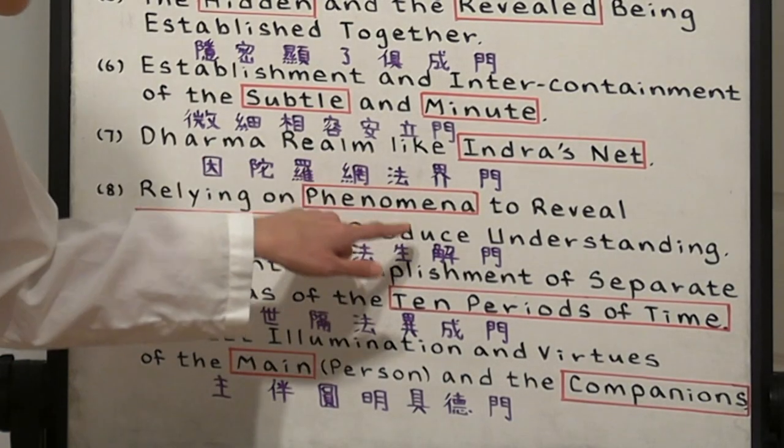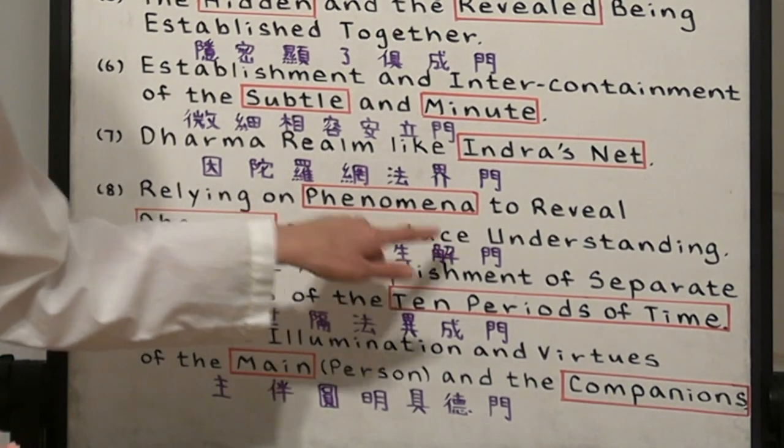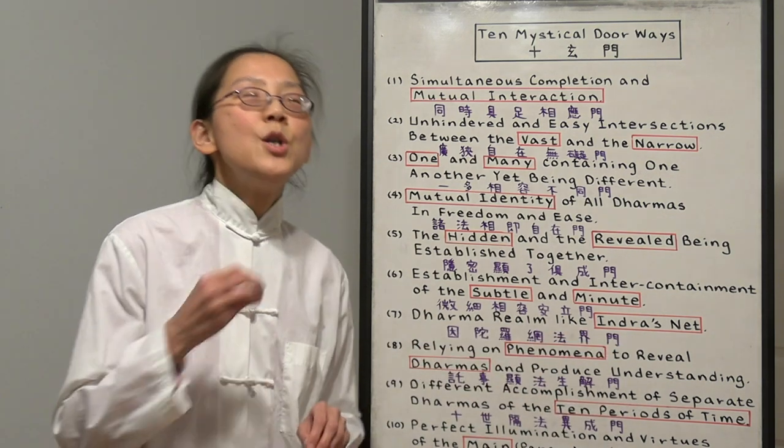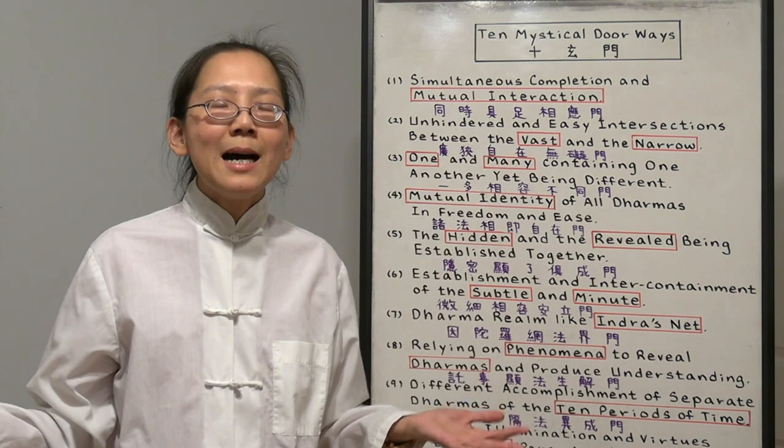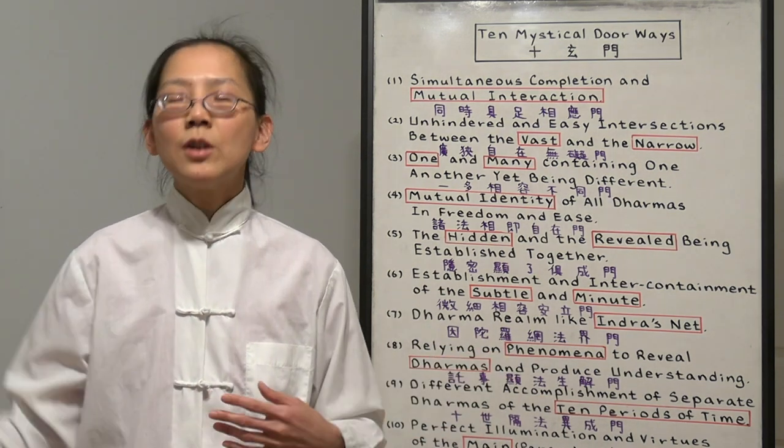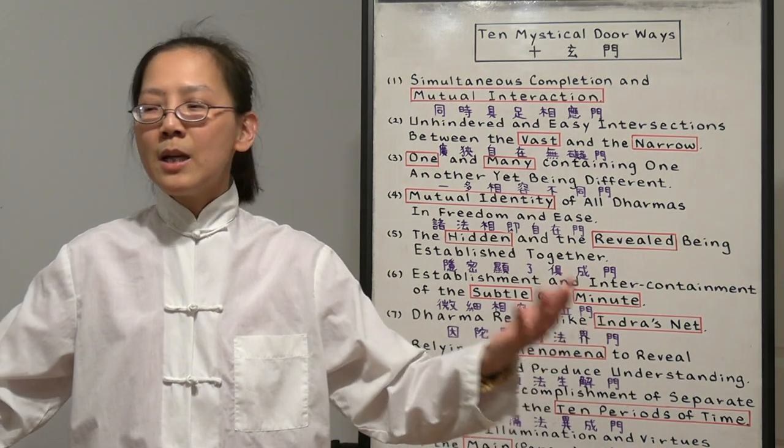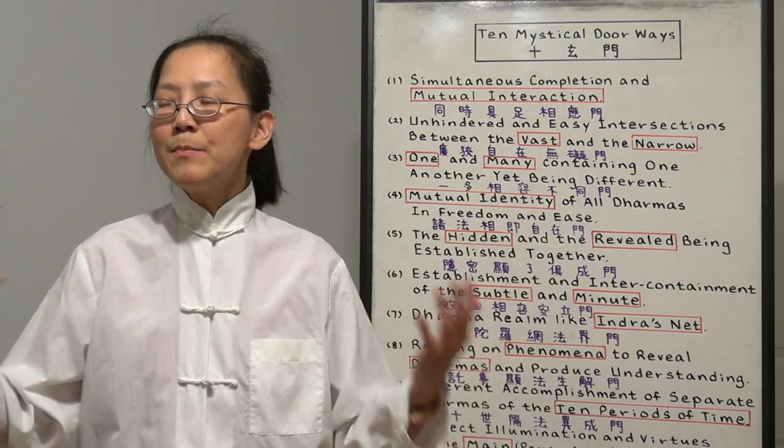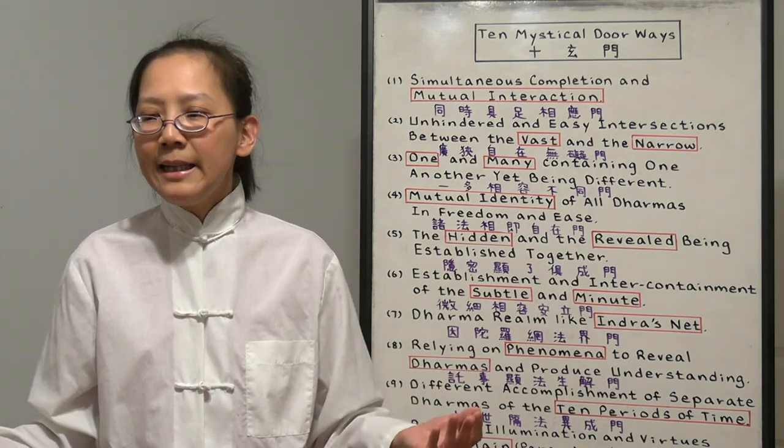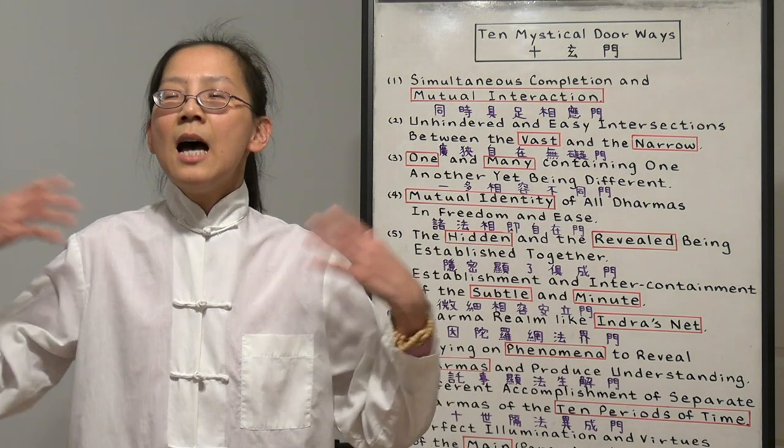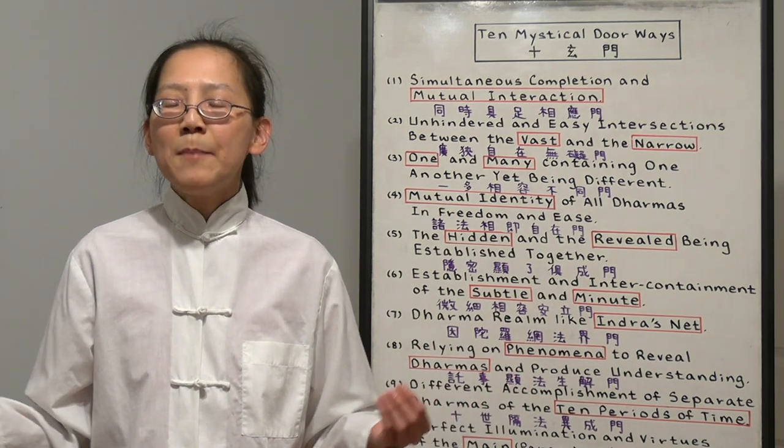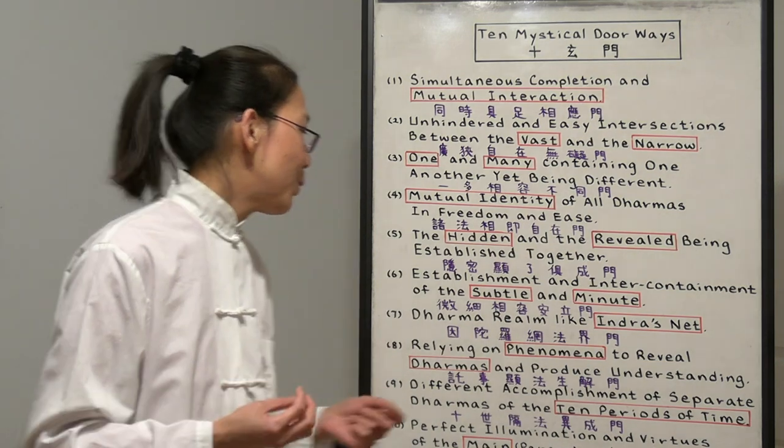Number eight, relying on phenomenon to reveal dharmas and produce understanding. Relying on the phenomenon to reveal the dharmas, which is the noumenon. We cannot see the world of the mind, but it's revealed through the physical world that we're living in right now. For example, if you're cooking, everybody with the same vegetable, they will cook different kind of dishes. Everybody's emotions, everybody's feelings different. So all your cooking, all your artwork, all your writing, everything you do is telling us how you are in your heart. If you're full of love, compassion, it's all showing up in your own life right now. So use your mind wisely.